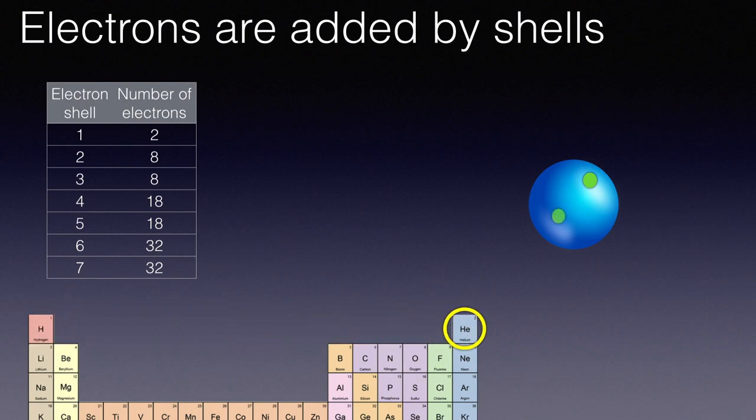And if we look at that element there, helium, we can see the depiction of the shell with two electrons. And helium is in the vertical group there, the noble gases. It is very unreactive. It finds it very difficult because its outer shell is full to react and form compounds with other elements.